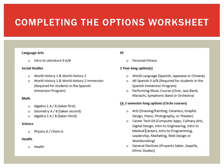Let's take a look at the options worksheet. All 9th grade students will take one year of Language Arts — 9A is first semester and 9B is second semester — and one year of Social Studies, which in 9th grade is World History 1 and 2 for first and second semester. Students planning to continue in the Dual Language Spanish Immersion program will instead select the World History 1 and 2 Immersion version of the Social Studies course.